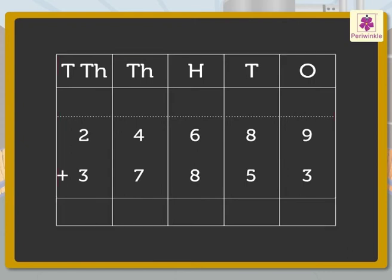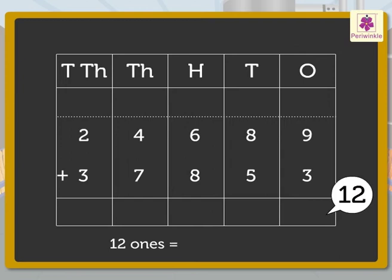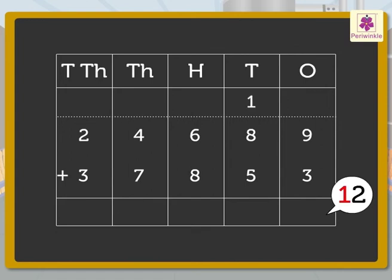First, we add the numbers in the ones column: 9 and 3. We get the number 12. Regroup the 12 ones to 1 ten and 2 ones. Carry the 1 ten to the tens column and write 2 in the ones column.